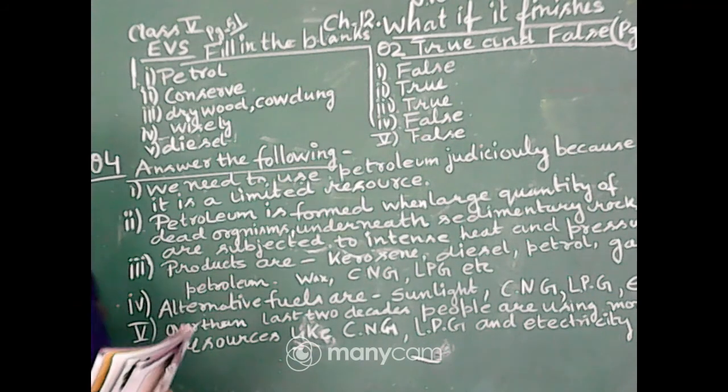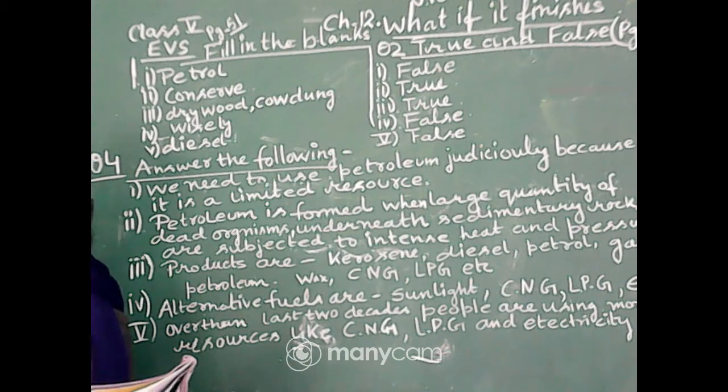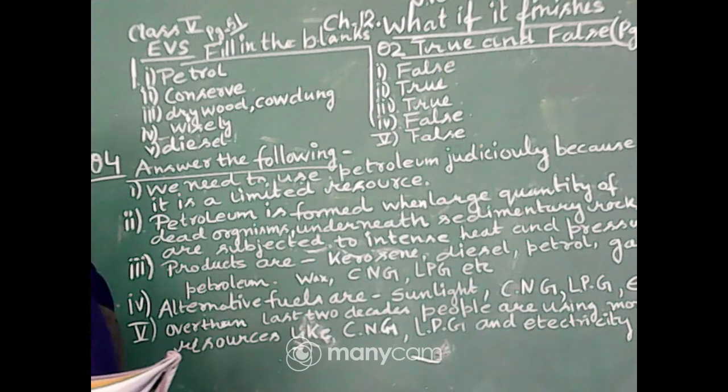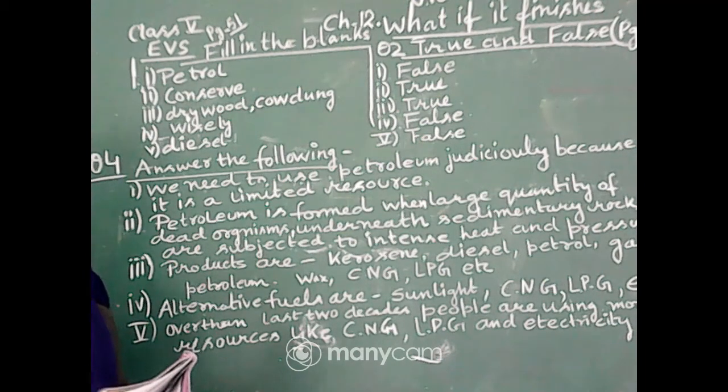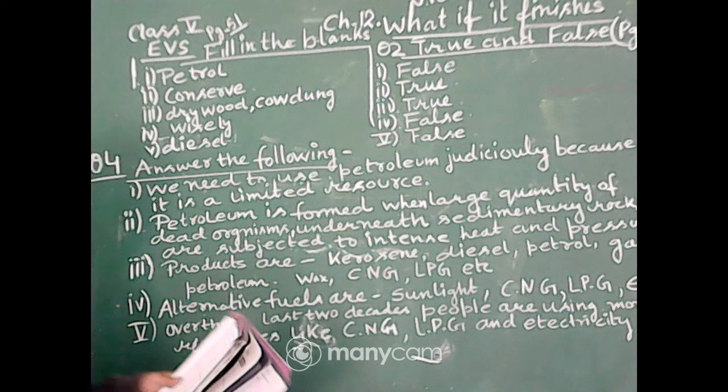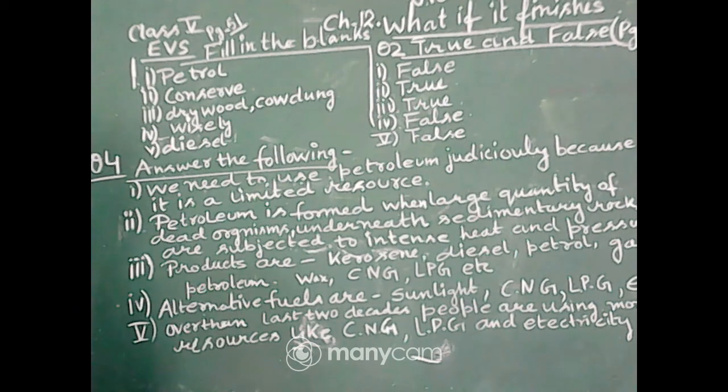Now, third question. I have written all the answers in a short form because nowadays you are getting all the answers. You have to write the short form of the answers. That's why I tried my best to write all the answers in a very short form. Question three, mention the names of some products which we get from petroleum. So, the products are kerosene, diesel, petrol, gasoline, petroleum wax, CNG, LPG, etc.